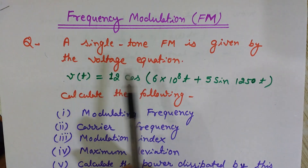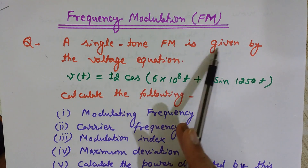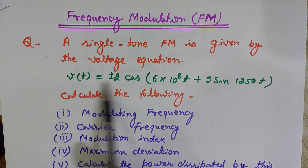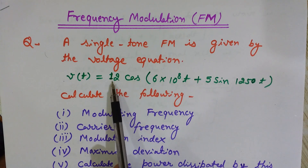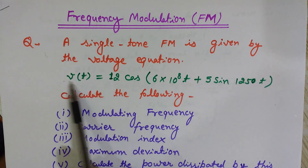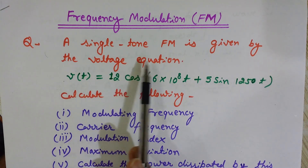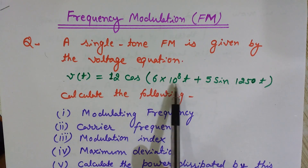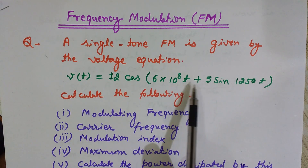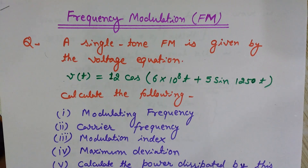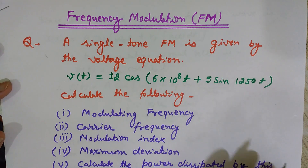A single tone FM is given by the voltage equation — this is the equation of the FM wave. vt denotes the equation of FM in voltage. So vt = 12 cos(6×10⁸t + 5 sin(1250t)). I want to calculate the following things from this equation.